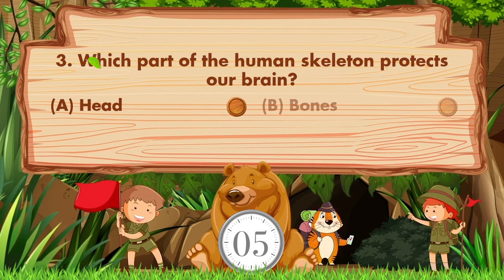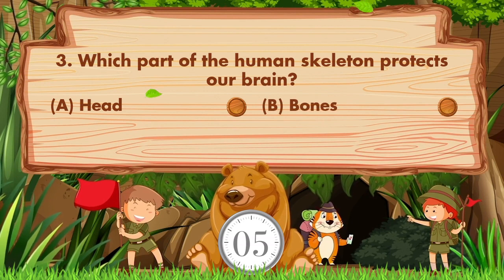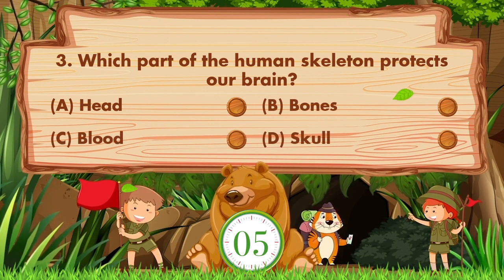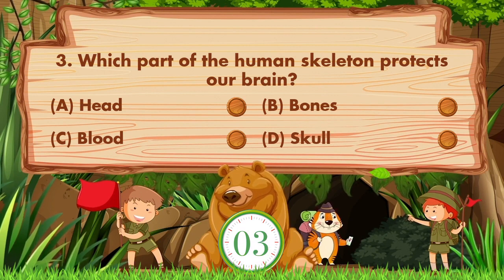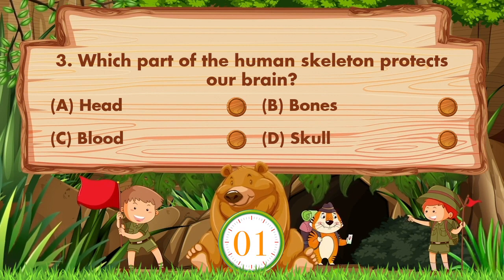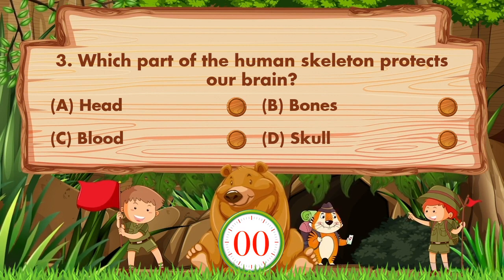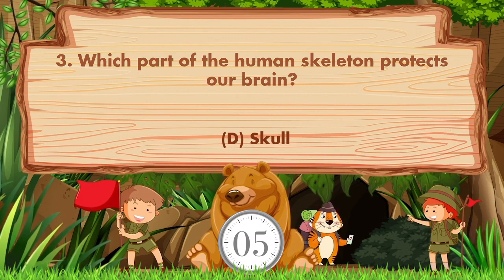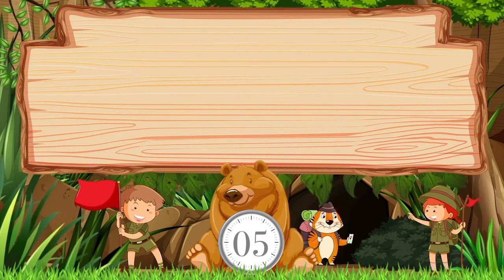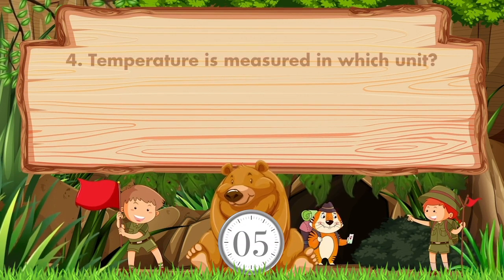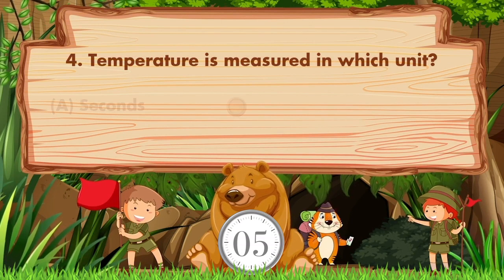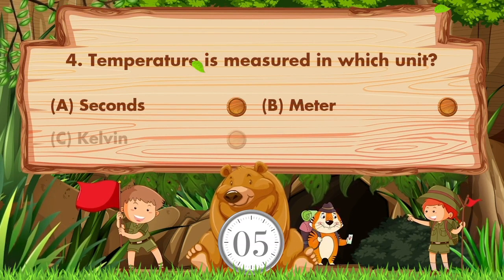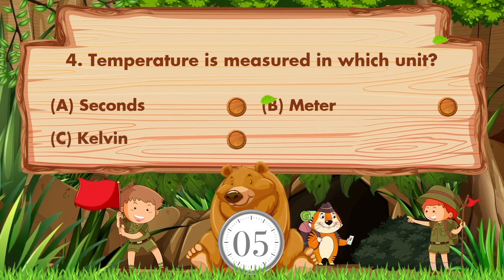Which part of the human skeleton protects our brain? Option A is head, B is bones, C is blood, D is skull. The answer is option D, skull.